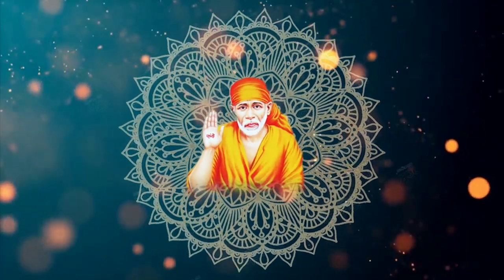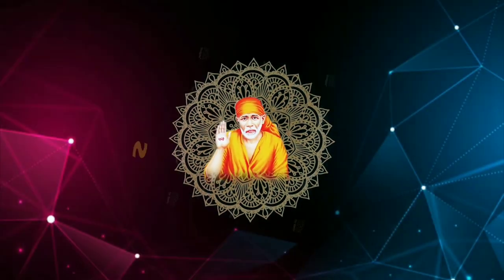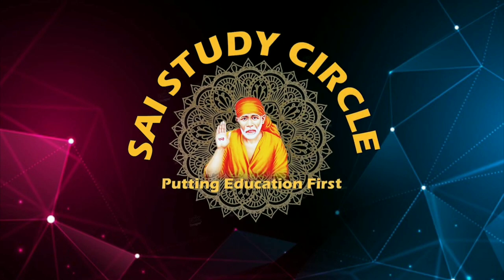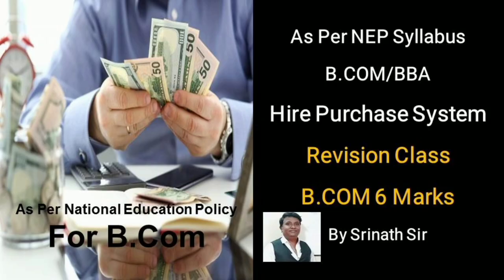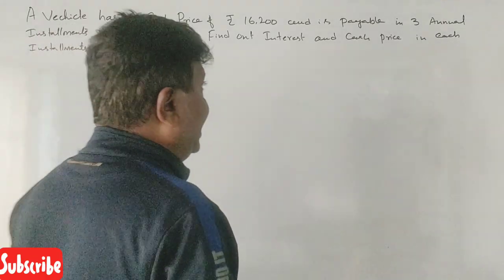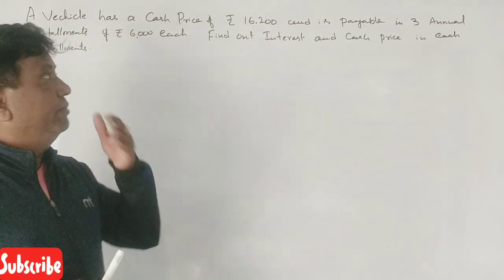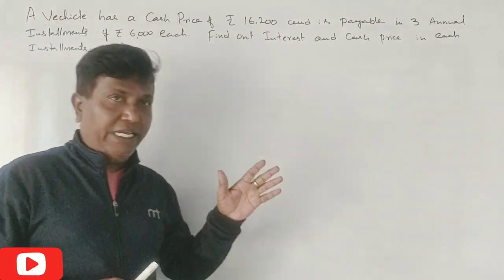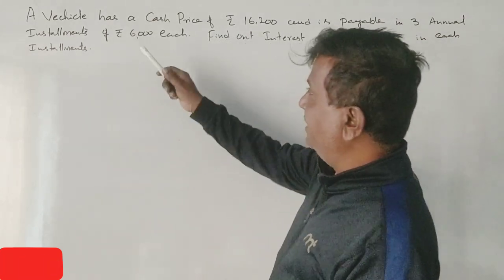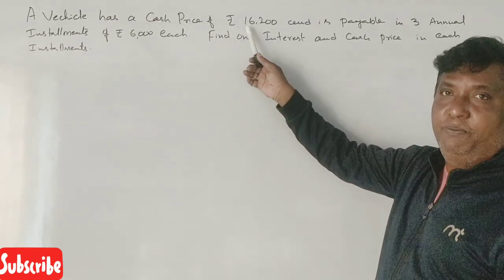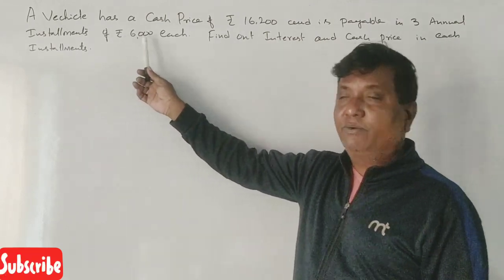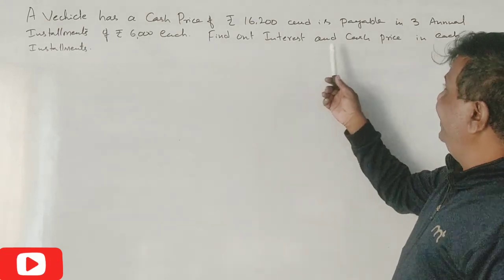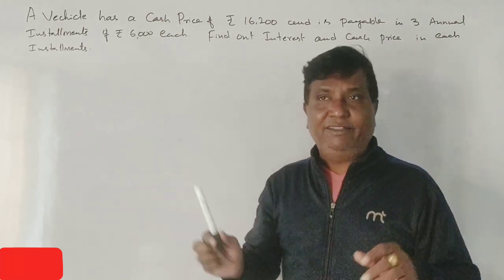Welcome to the Hire Purchase System. The first question is: a vehicle has a cash price of Rs. 16,200 and is payable in three annual installments of Rs. 6,000 each. Find out the interest and cash price in each installment.